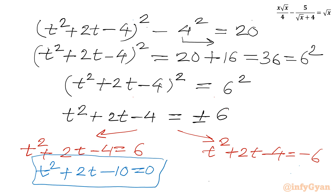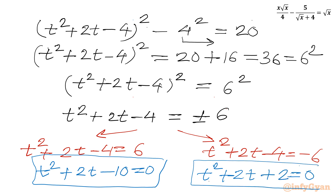The second quadratic equation: t² + 2t − 4 = −6, which gives t² + 2t + 2 = 0.